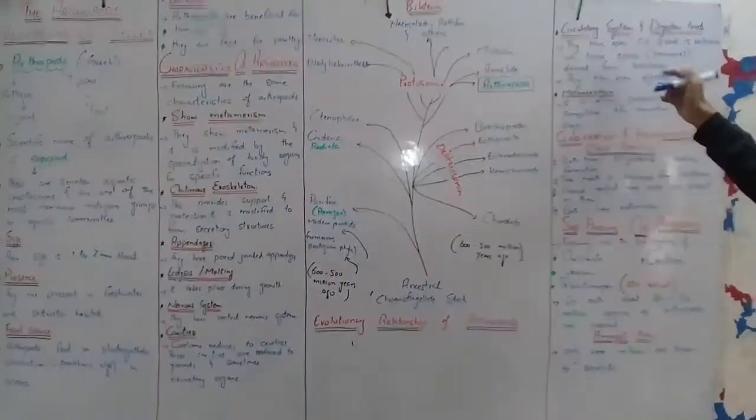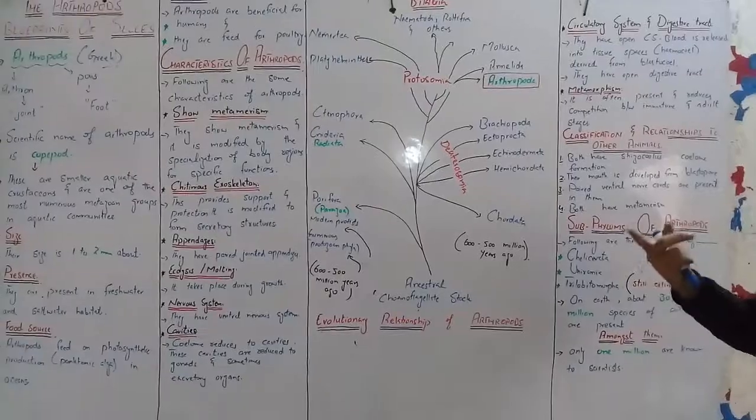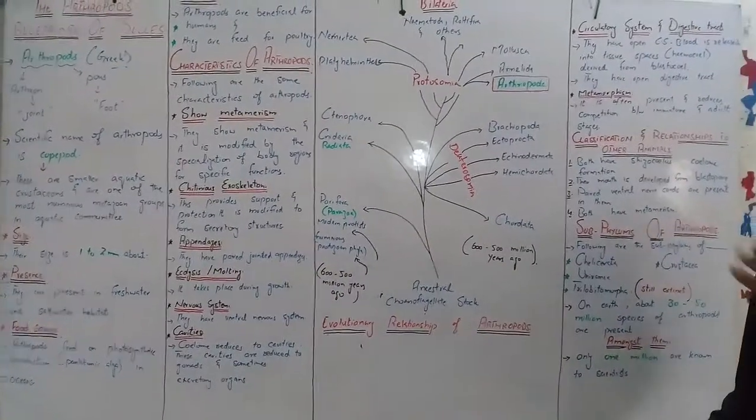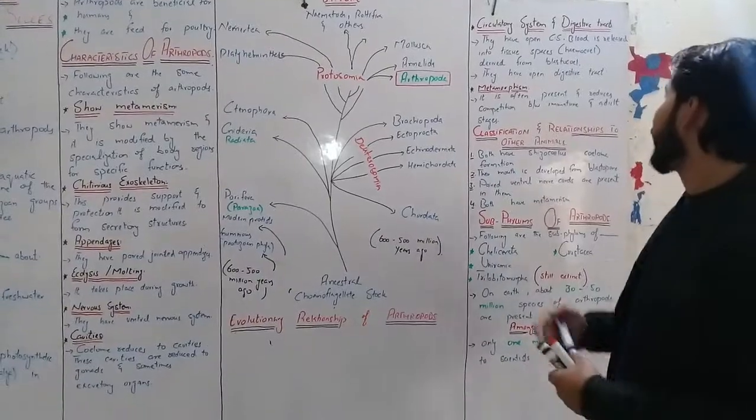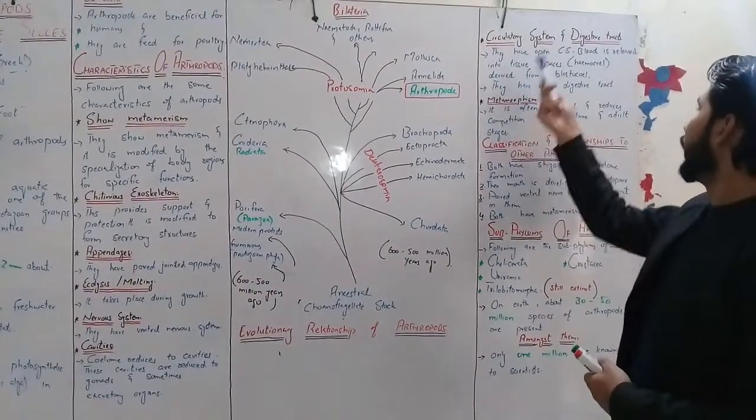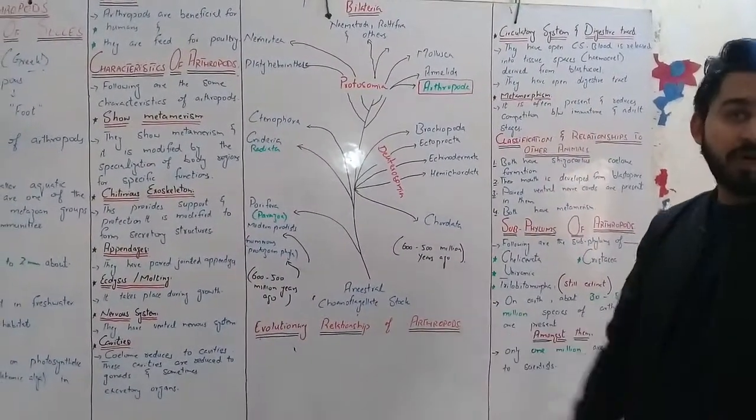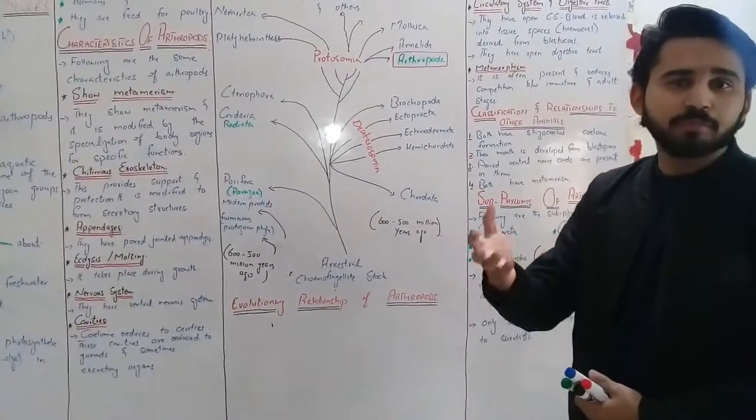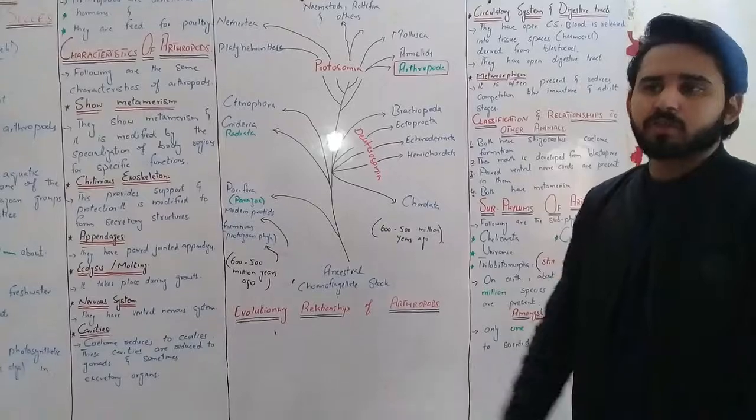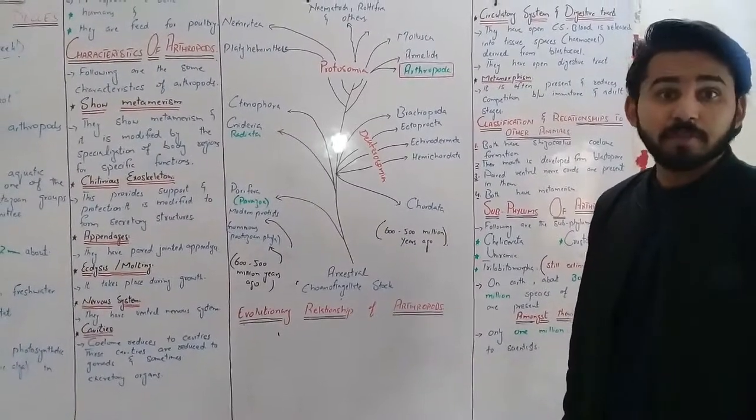Next is the circulatory system. If we look at the circulatory system, it is going to be open. The circulatory system is open type available to us.